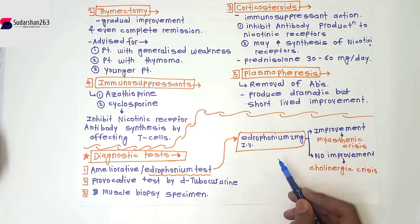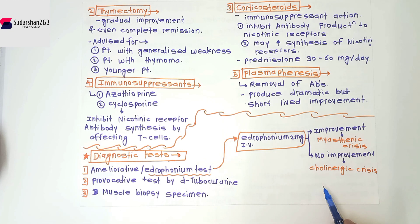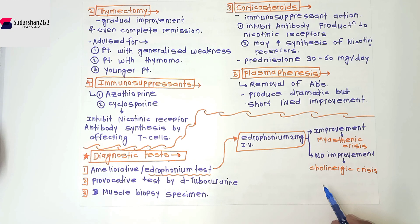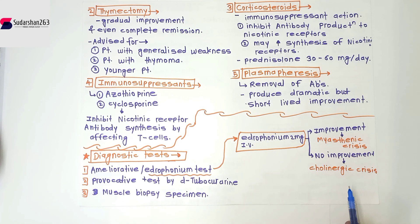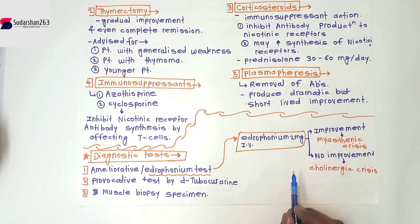After the initial 2 mg dose, we give the remaining 8 mg intravenously. If improvement occurs, this is the case of myasthenia gravis. If no improvement is seen, this is a case of any other autoimmune muscle disorder like muscular dystrophy. Thank you for watching, and if you like this video please subscribe to my channel.